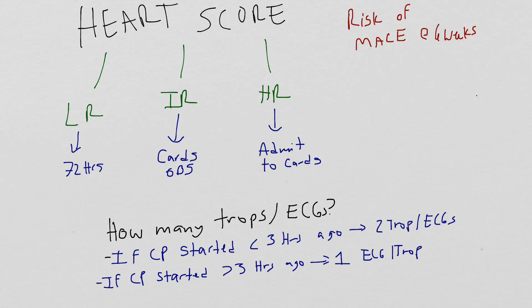Another common question is how many EKGs and troponins do we need to definitively make a decision on a patient? This is a hotly debated topic, but the most likely correct answer is that it depends. It really depends on how long the chest pain has been going on. Typically we say if the chest pain episode started less than three hours ago, you should get two sets of EKGs and troponins. Whereas if the chest pain episode started more than three hours ago, you can rule the patient out with one EKG and troponin.